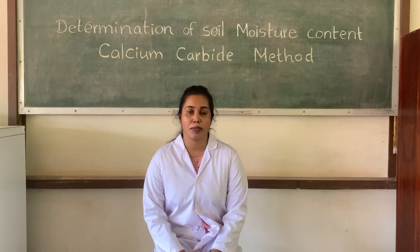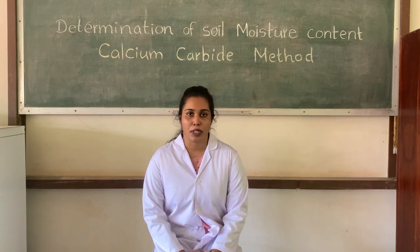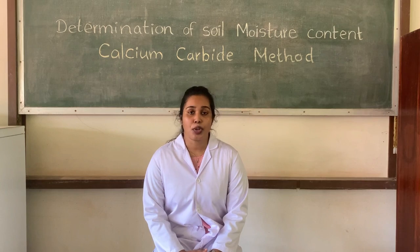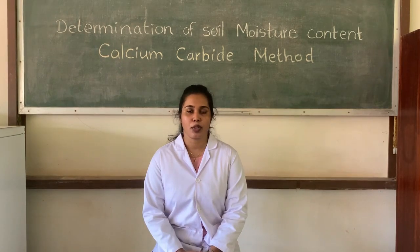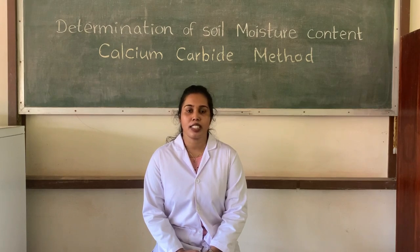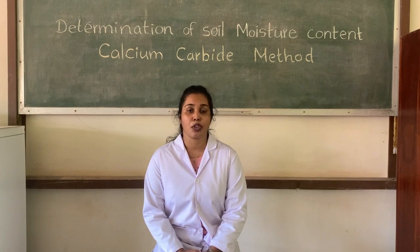Now we will discuss the benefits and drawbacks of this method. This method is considered the best portable method for soil moisture content determination. As per the requirement, we can carry the speedy moisture meter wherever we want and take quick readings. Quick readings are very important for irrigation scheduling, and this method can be used for each and every soil type without redoing the calibration. The major drawback is that with time, mechanical wear can occur in the speedy moisture meter and we cannot do the calibration on our own.